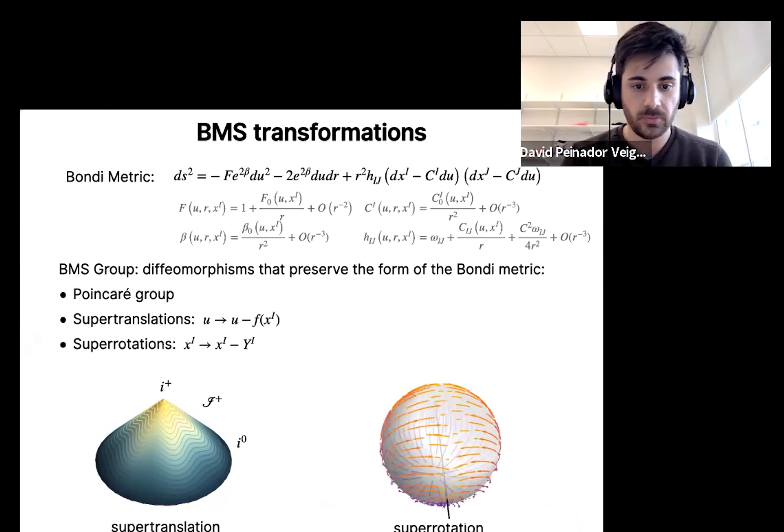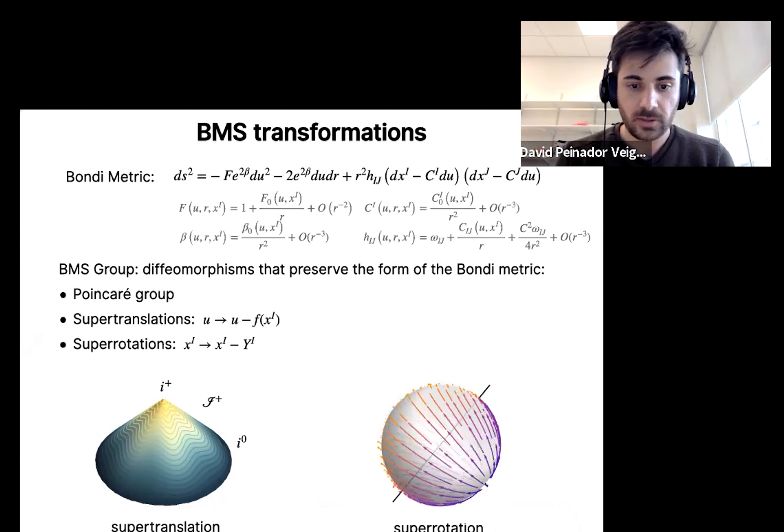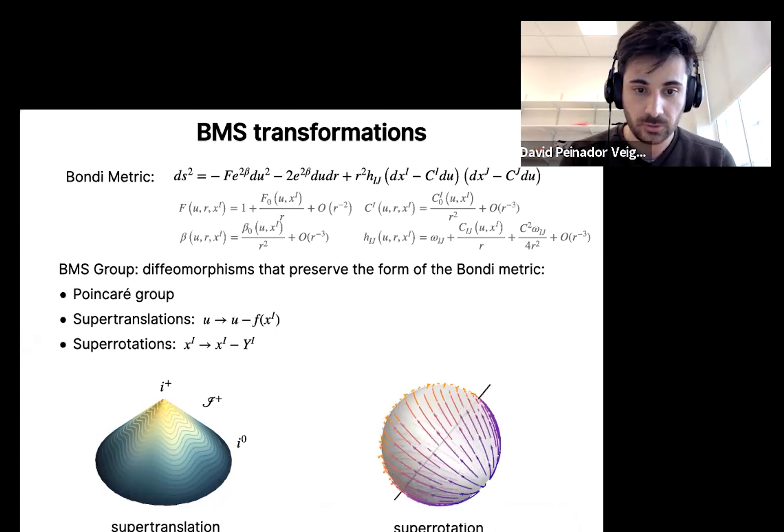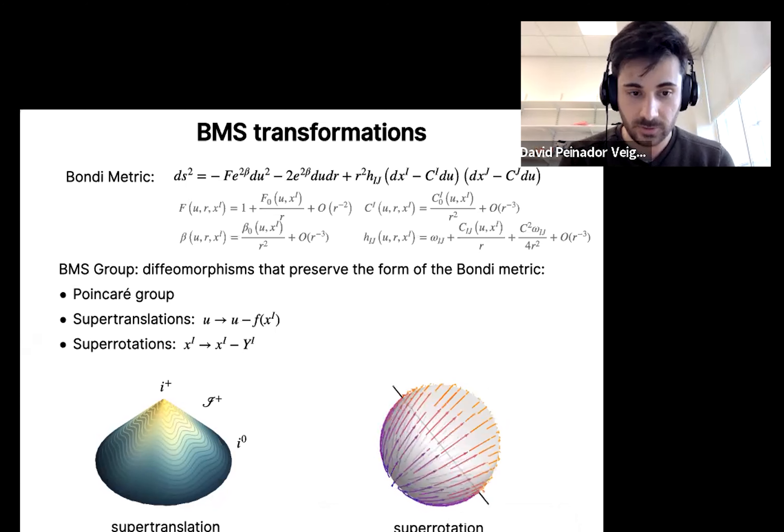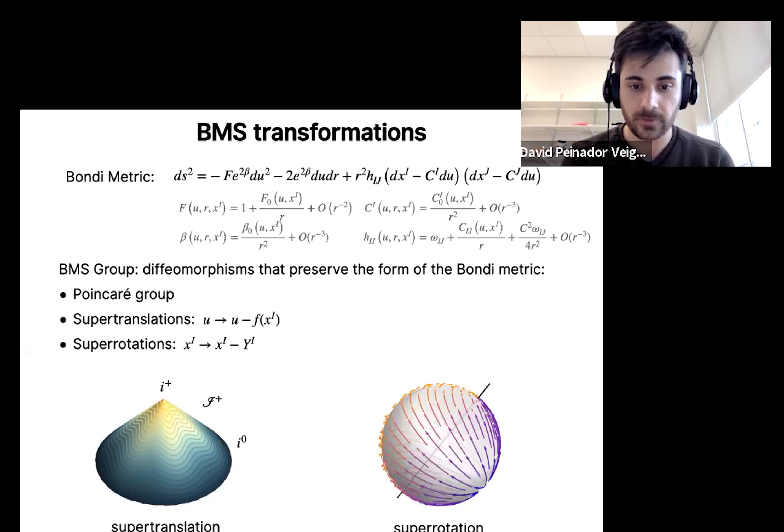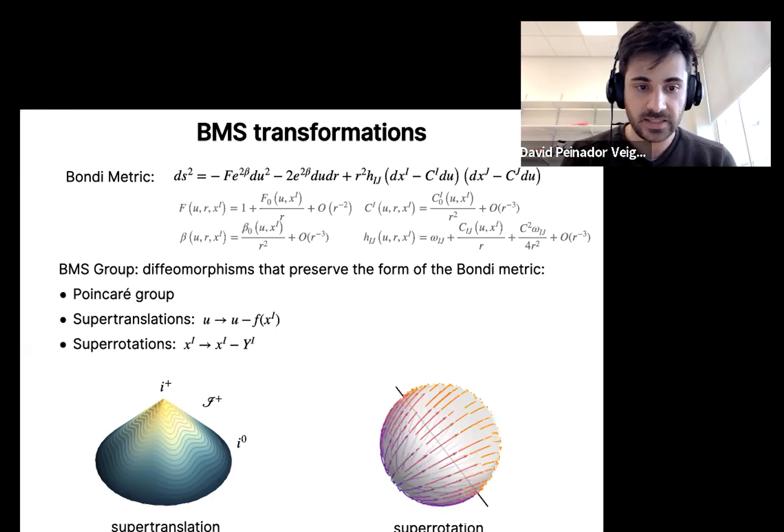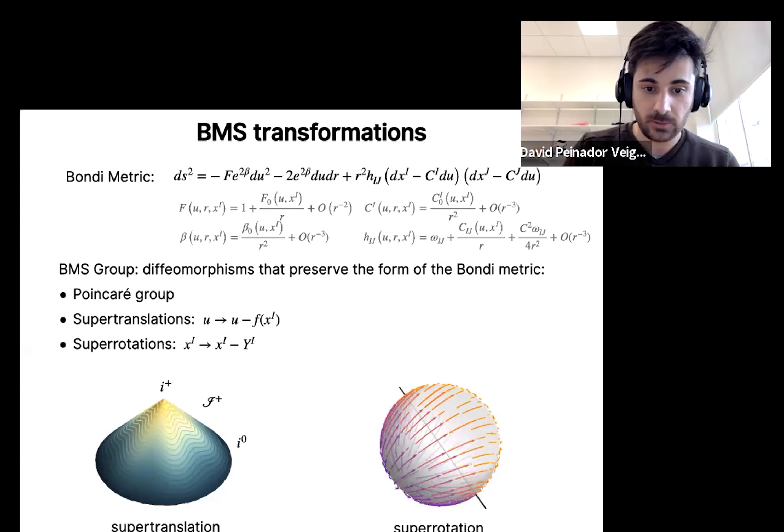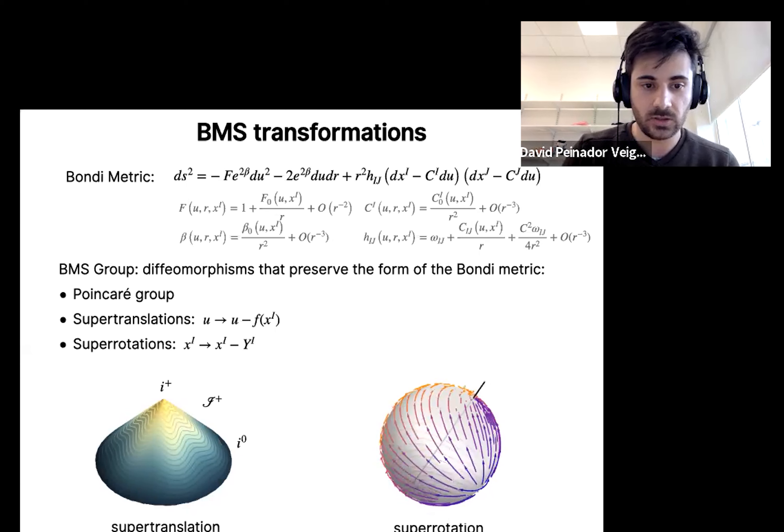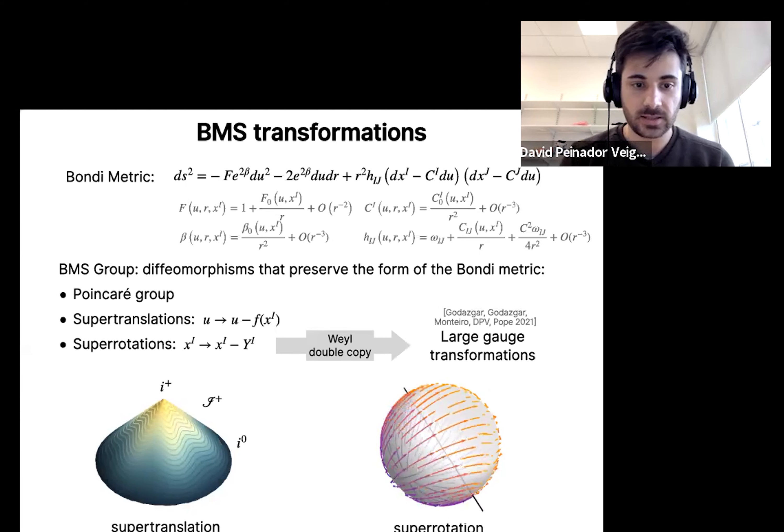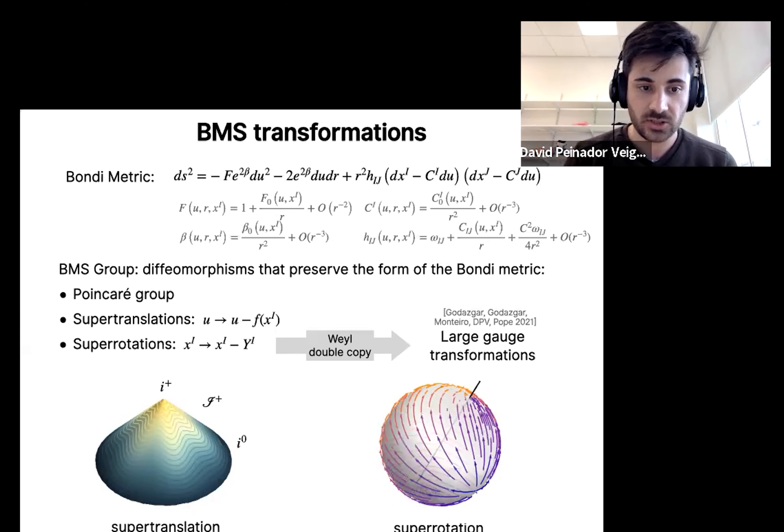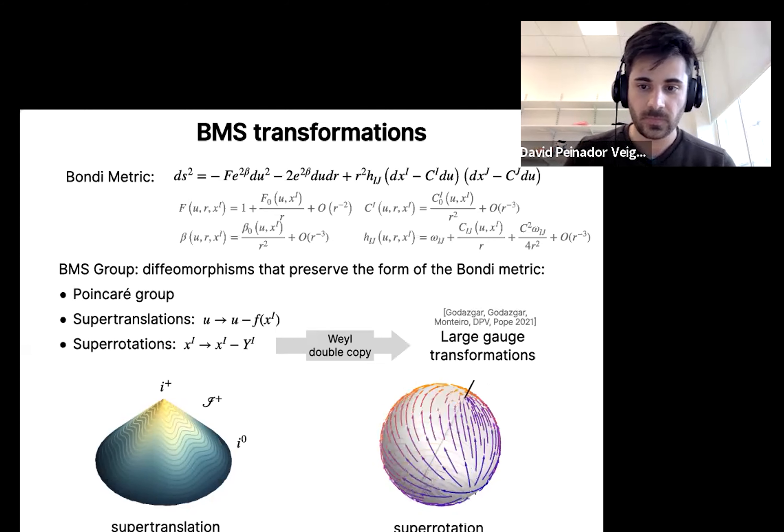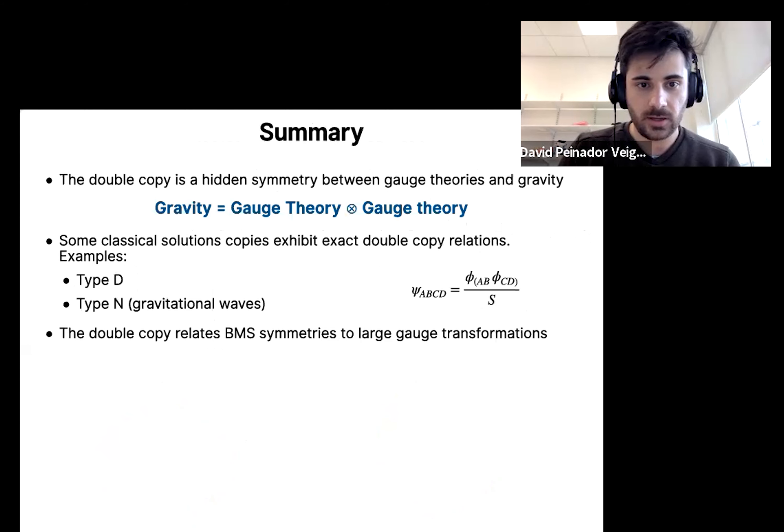But so now we want to use the Weyl double copy to relate this to something analogous in gauge theory or in electromagnetism. And of course, the most similar thing that we have in electromagnetism are large gauge transformations, which are gauge transformations that don't fall off at infinity. And indeed, if you use the Weyl double copy, you can find that, at least in some examples, the super-rotations are related to large gauge transformations.